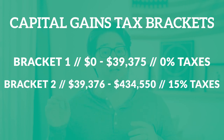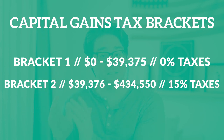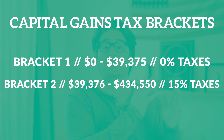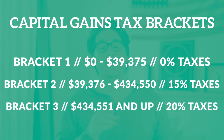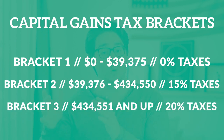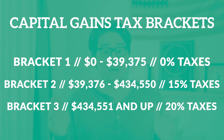The second tax bracket includes anyone who makes $39,376 per year all the way up to $434,550 per year. Anyone falling within this level of income pays 15% taxes on their long-term capital gains. The final bracket is anyone making $434,551 or more per year — these folks will pay 20% on their long-term capital gains.